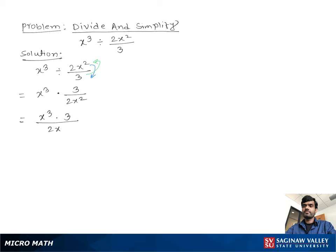Now x cube divided by x square, leaving the x at the numerator, so you can write x times 3, which is 3x over 2, where x is not equal to 0.